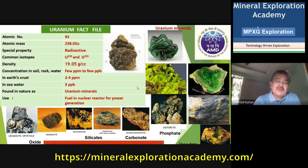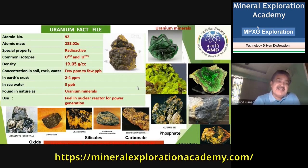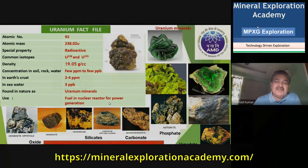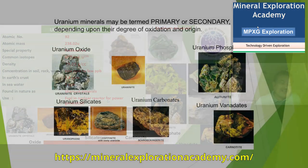The common isotopes are uranium-238 and uranium-235; though there are two more isotopes, their half-life is very low so they do not exist much. The density is very high. If we take the total Earth's crust, concentration is nearly 2 to 4 ppm, and in seawater a concentration of 3 ppb is also available. It is found in nature as a uranium mineral and is used as a nuclear reactor fuel and for power generation.